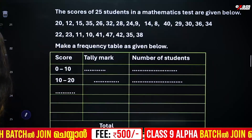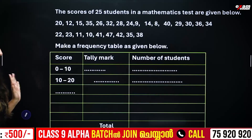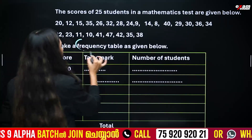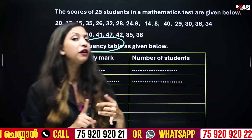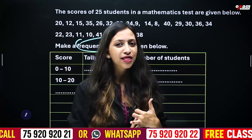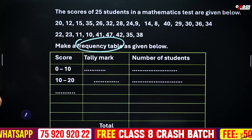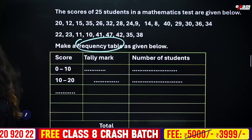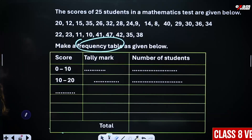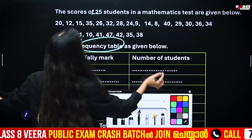This is a frequency table, which is also represented as a histogram. You can see the frequency table where the score is marked as a tally mark. You can see the number of students — we can see 25 students.